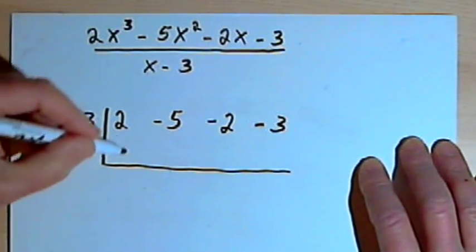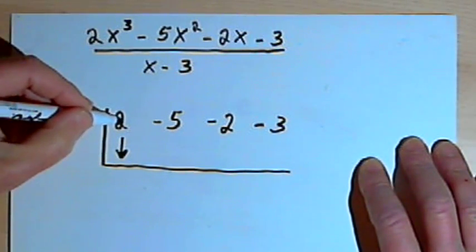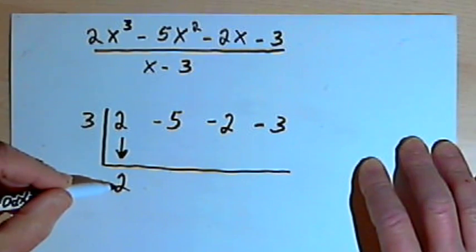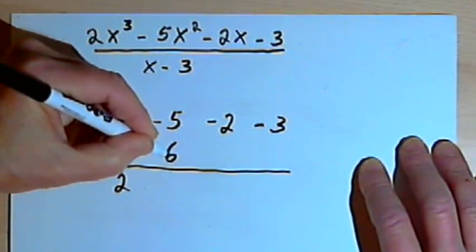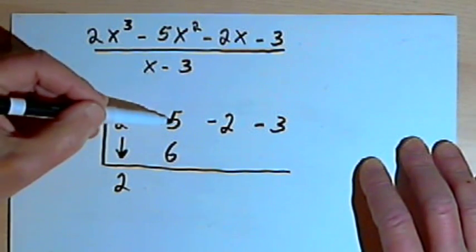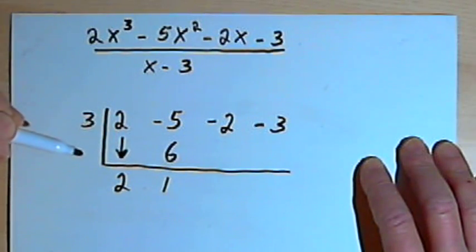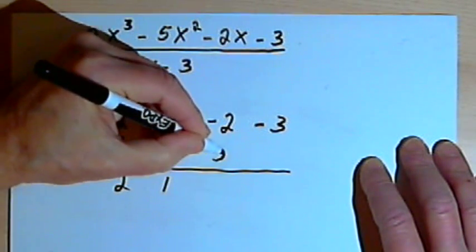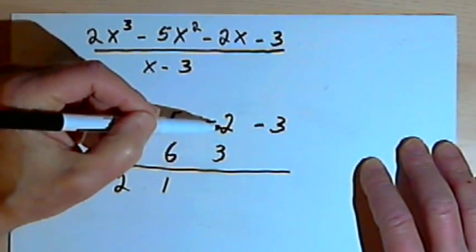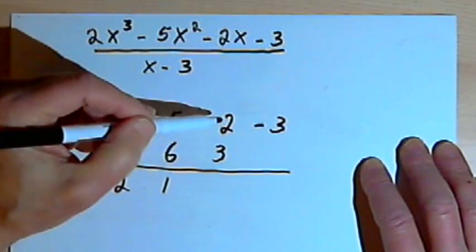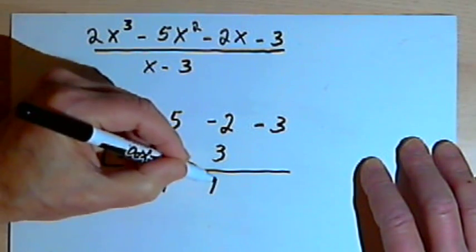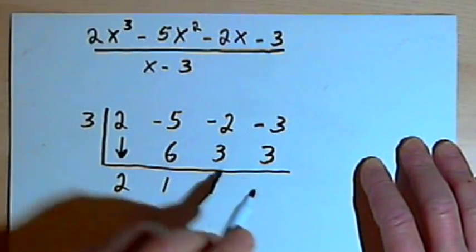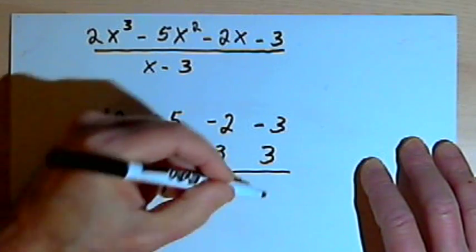Now the process works like this. I bring down the first number that I have in the box, that's a 2, and write that underneath the box. Then I multiply this 3, the divisor, times the 2, that's going to be 6, and write it underneath the next number. Then I add up the two numbers in that column. Negative 5 plus 6 is a positive 1. Then I multiply again. 3 times that positive 1 is 3. I add the two numbers in that next column. Negative 2 plus 3 is, once again, a positive 1. I multiply. 3 times 1 is 3. I write that underneath that negative 3. I add these two numbers together. The result is a 0.